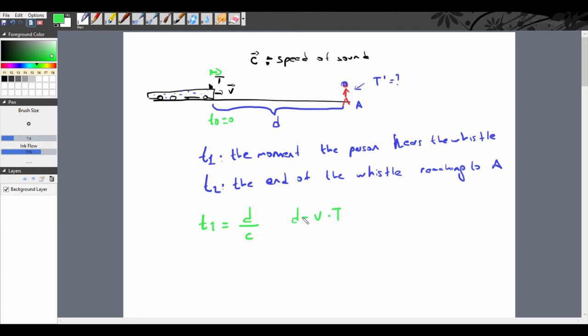The distance remaining will be d minus v times T, because the train moves when the whistle goes on. The distance covered will be v times T during that duration.